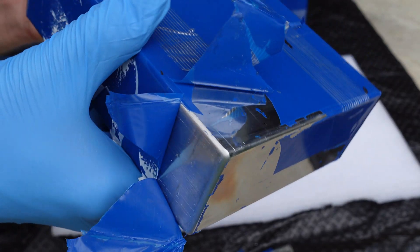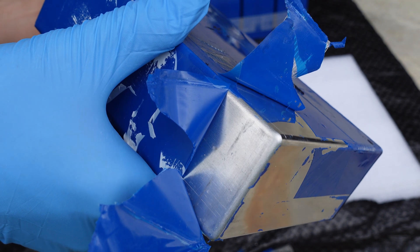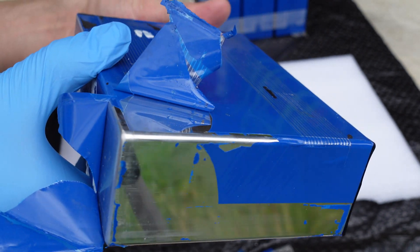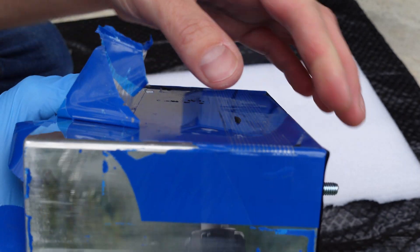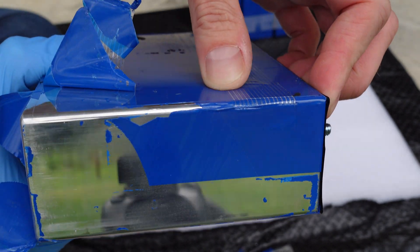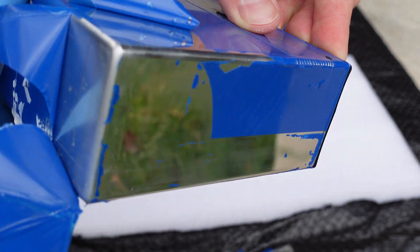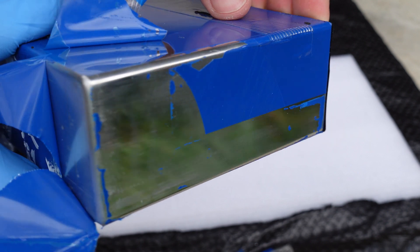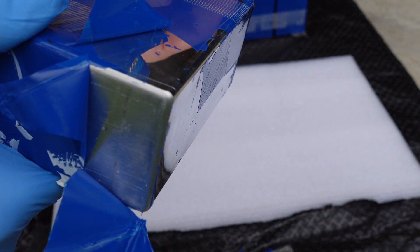All right, there are no signs whatsoever of any liquid damage or residue or any denting at all on this battery, so that flatness there was just the shrink wrap. You can see the edge is perfectly round and the corner is a perfect corner.